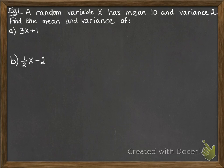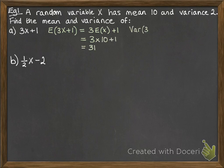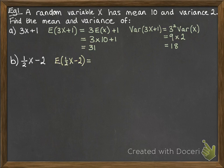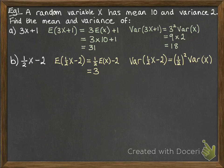Let's see some examples. We have a random variable x with mean 10 and variance 2, and we want to find the mean and variance of 3x plus 1 and of (1/2)x minus 2. For 3x plus 1, the expectation is 3 times E(x) plus 1, and then we carry on with the variance calculation. For (1/2)x minus 2, the expectation gives 3, and the variance, following through our calculations, gives one half.